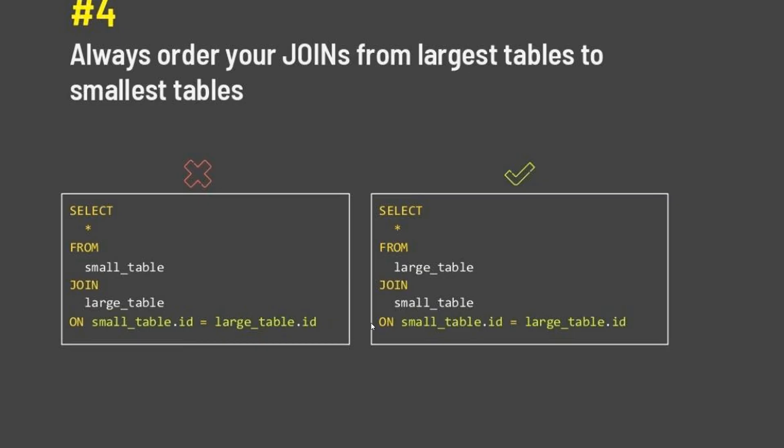Number four is: whenever you do a JOIN between two tables, the larger table — meaning the one with more records — should be on top, and the JOIN should be on the smaller table. On the wrong side, the small table is on top with a JOIN on the larger table, which is not preferable. The correct approach is to put the large table on top followed by the small table. This is the fourth technique for writing better queries.